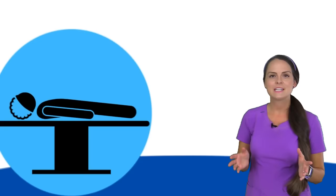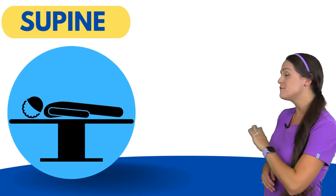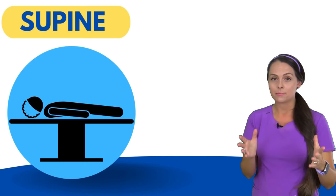The first position is the supine position. Notice our patient is lying on their back with the back of the head resting flat and the legs are extended. If you're having trouble remembering this position, remember the phrase: put the patient on their spine to be supine.